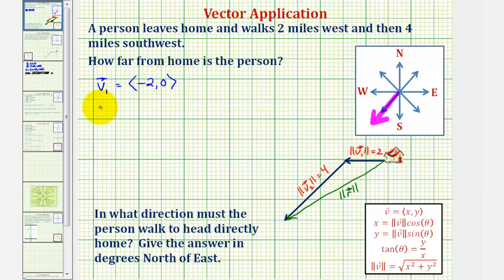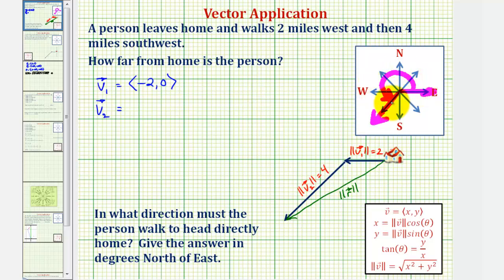For vector v sub two, the x component equals the magnitude times cosine theta, and the y component equals the magnitude times sine theta. We know the magnitude is four, but we need to determine theta, where theta is the direction measured from the positive x axis at the origin. Since the direction is southwest, theta equals 180 plus 45, or 225 degrees. So the x component is four cosine 225 degrees and the y component is four sine 225 degrees.